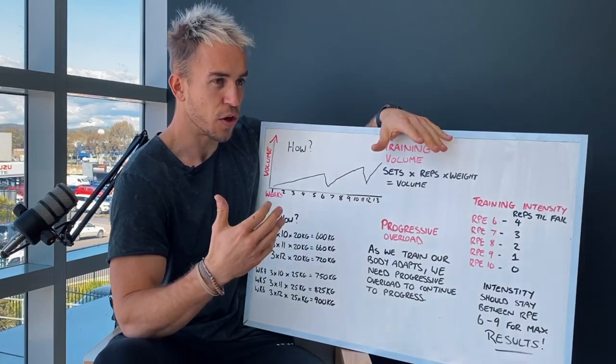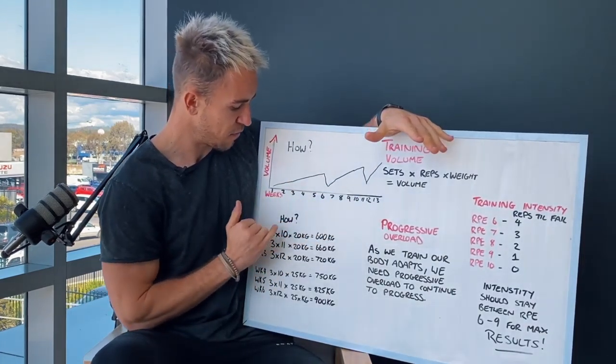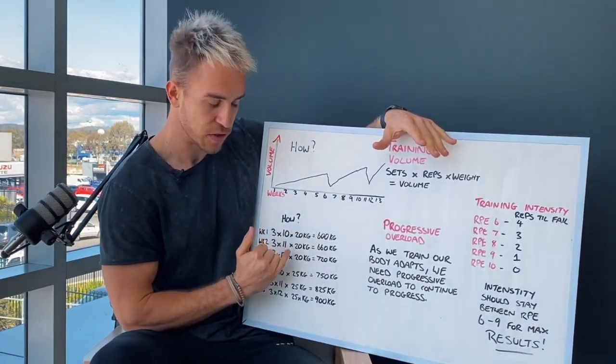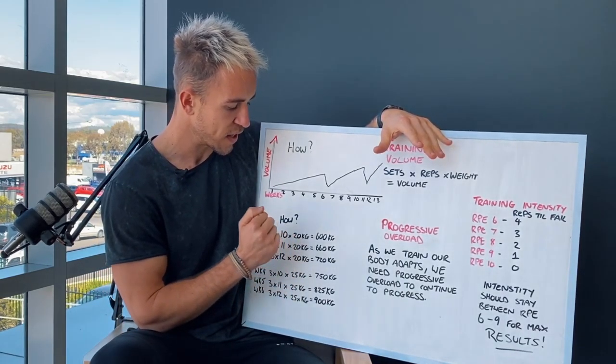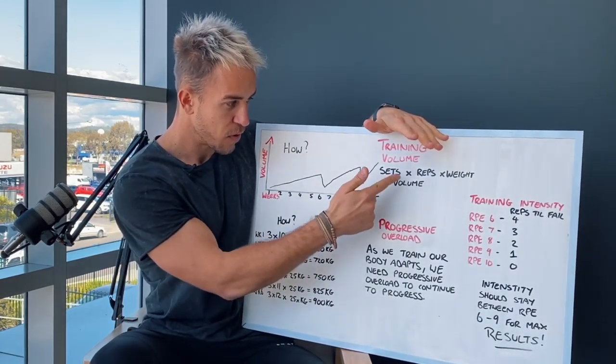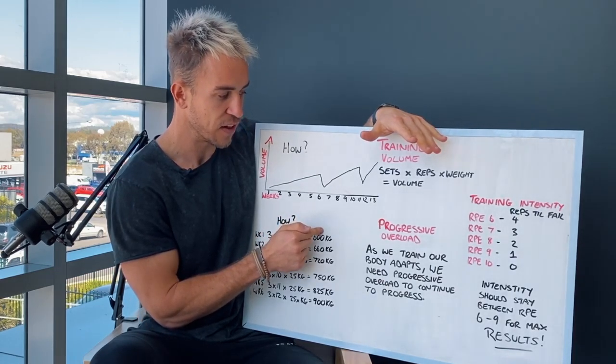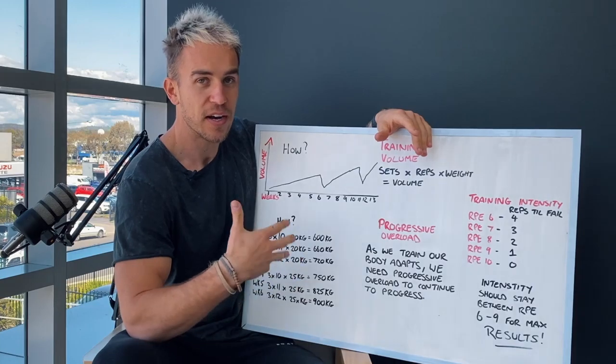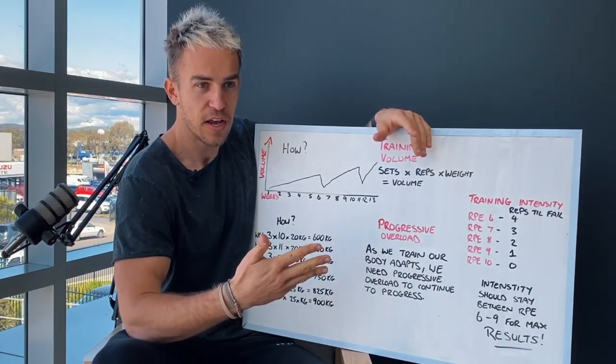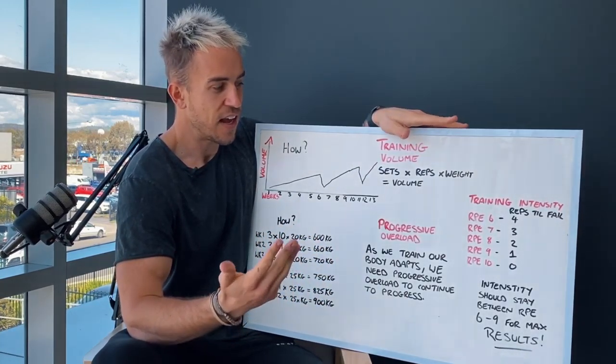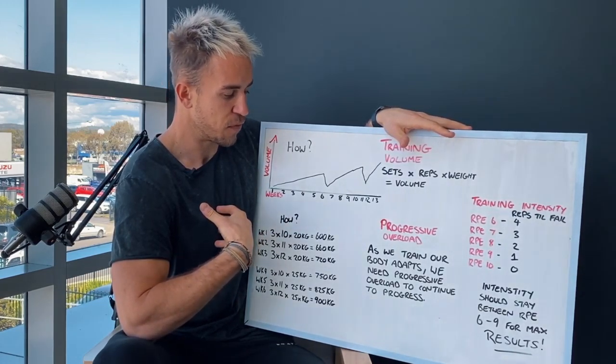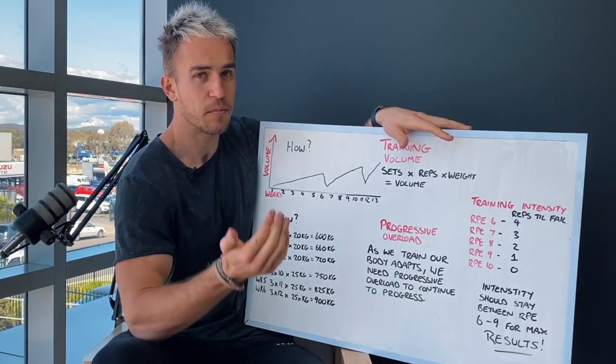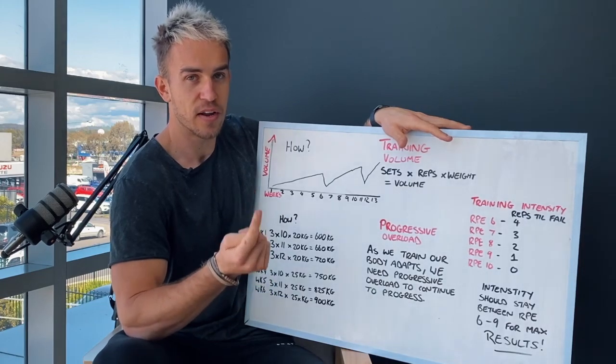So where we could be lifting, for instance, here I've got a bit of an explanation. We could be lifting three sets of 10 at 20 kilos. The volume will equal 600 kilos. Now our body over time will get used to us lifting that 600 kilos where then it won't be as very effective for us anymore.